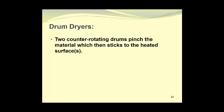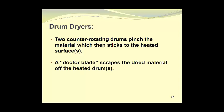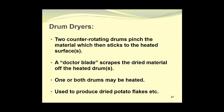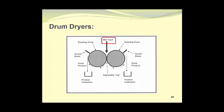Drum dryers consist of two counter-rotating drums that pinch the material which then sticks to the heated surfaces. A doctor blade scrapes the dried material off the heated drums once the moisture has been removed. One or both of the drums may be heated. They can be used to produce products like dried potato flakes. In this diagram, we see wet feed being introduced between two rotating drums. It then goes into the adjustable nip between the two counter-rotating drums where it is pinched and sticks to the surface of the drums. In this case, both drums are heated and you can see how the material would stick to it. The material then travels on the drum around until it gets to the position where a doctor blade scrapes the material from the heated drum and allows it to fall into a product collection receptacle. Wet material is continuously placed into the nip and the process continues.